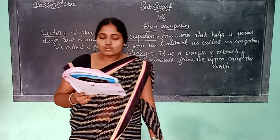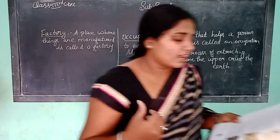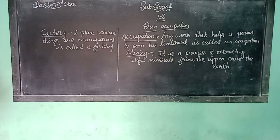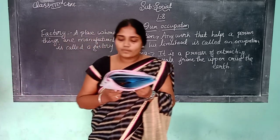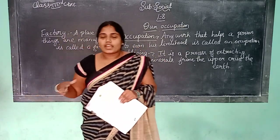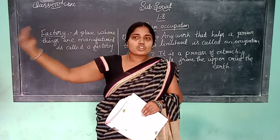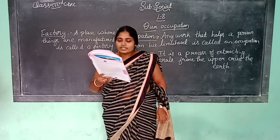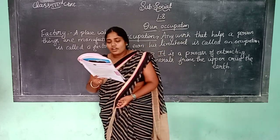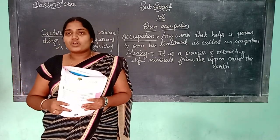Once goods are produced in the factories, they are packed and loaded into trucks or trains and delivered to shops to be sold. Consumers then buy the goods from the shops. Transport services play a key role in transporting goods from factories to the end users.